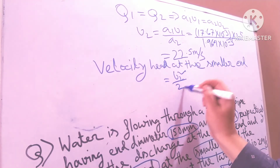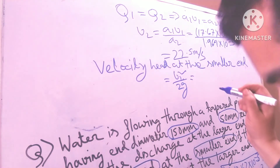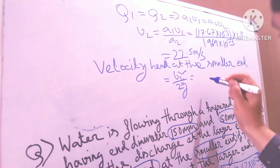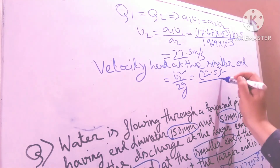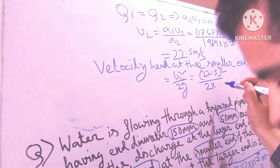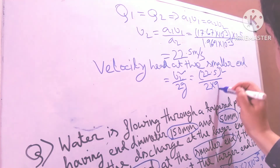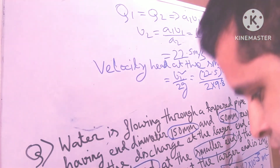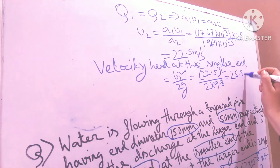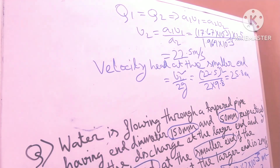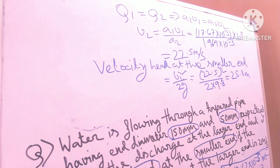V2 squared divided by 2G equals 22.5 squared divided by 9.8, equals 25.8 meters. So friends, I hope I have made this concept clear. This is very easy — how to find the velocity head at the smaller end with the help of the Bernoulli equation.